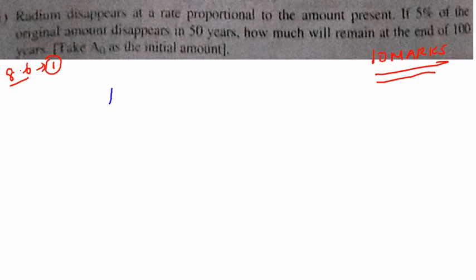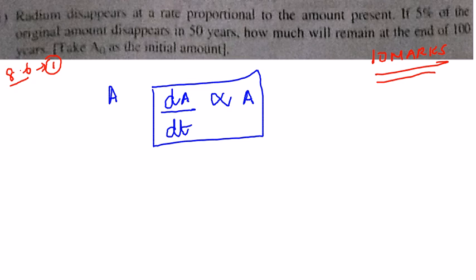If A is going to be the amount of radium present, the rate at which the radium is disintegrating is always going to be proportional to the amount that is present. So, the rate at which the amount is changing is going to be proportional to the amount A which is present at any time T. We can say dA/dT is equal to K into A, where I am removing the proportionality sign by putting an equal to, and K is the constant.